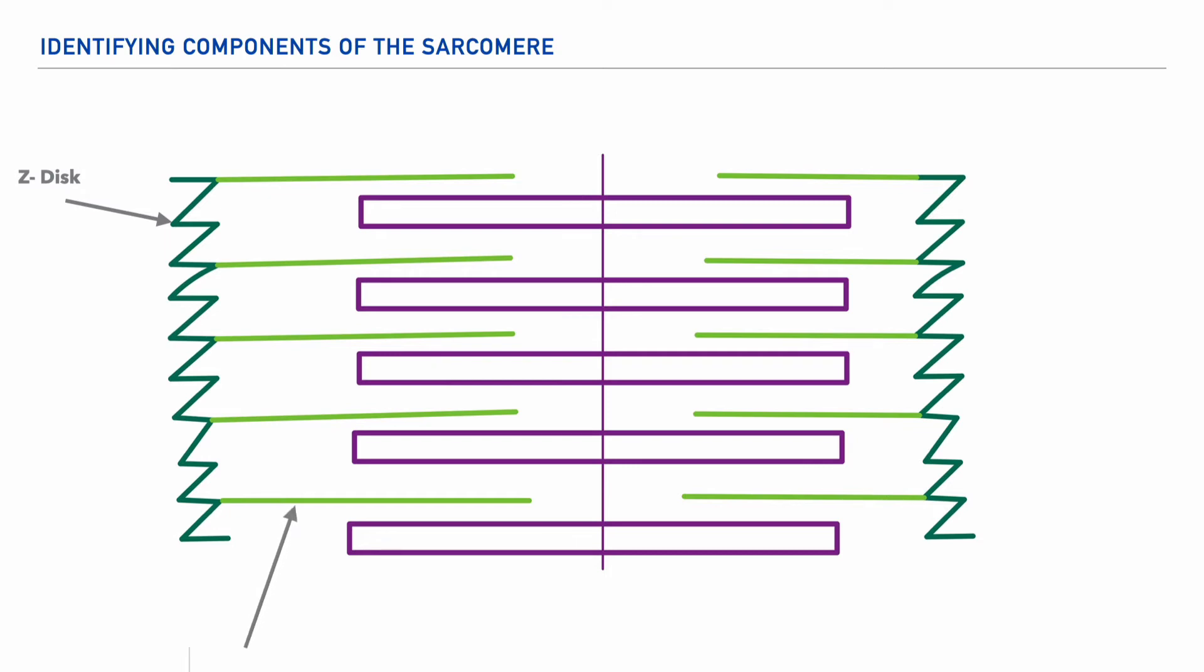And as we look at the middle of our structure, we'll find another anchor called the M-line, and it's this M-line that serves as an additional anchor, but this time for the thick purple boxes that you see here, which is referred to as the myosin filament.